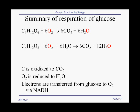Here is a summary for respiration of glucose. It's typically written as in this first equation: glucose, the six-carbon sugar, is oxidized by six molecules of molecular oxygen to six molecules of carbon dioxide and six molecules of water. While this is a properly balanced chemical equation, it doesn't really tell you what is happening in terms of oxidation and reduction reactions.